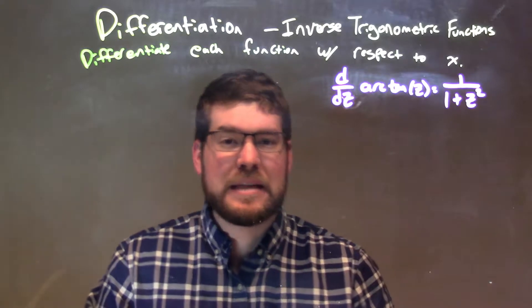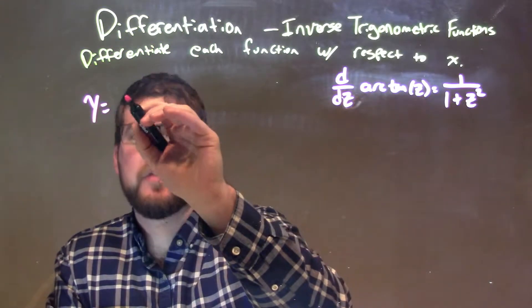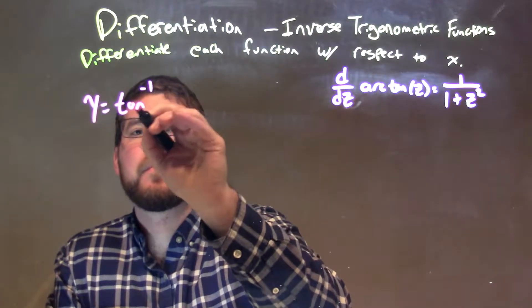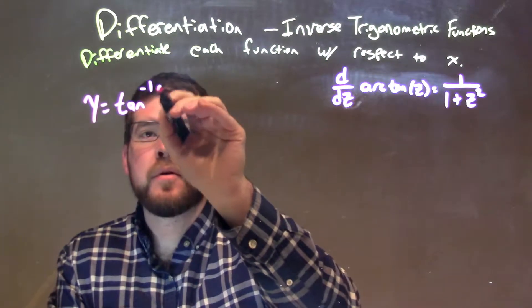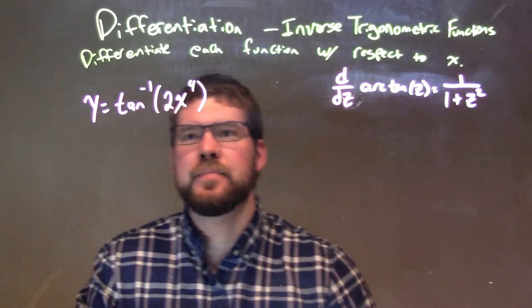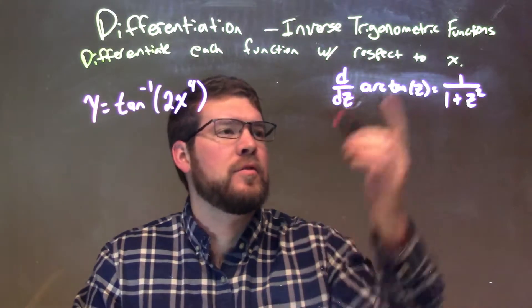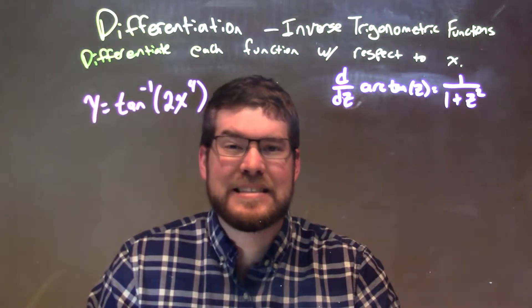So if I was given this function, y equals the arctangent of 2x to the fourth power. Well, I know my definition of the derivative of arctangent is 1 over 1 plus z squared.